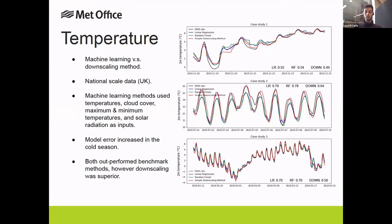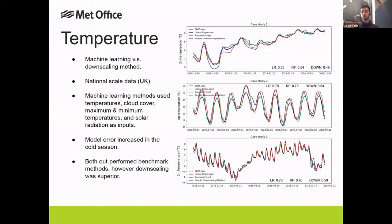The input variables used for the machine learning methods included temperatures, cloud cover, maximum and minimum temperatures for the day, and solar radiation. The NAO index was explored along with surface pressure, but these were removed because they didn't give a good representation of the synoptic scale features. For the downscaling method, only temperatures and the maximum/minimum temperatures were used, and a range was calculated using those maximum/minimum temperatures fed into the model.